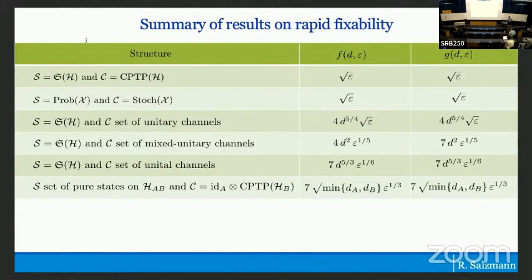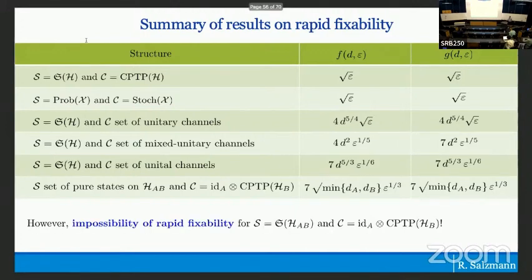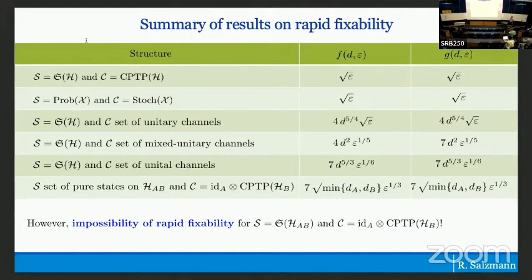On the other hand, rapid fixability is not true generically for all structures of interest. One structure I was really interested in — which connects directly to quantum Markov chains — is the bipartite setup with general mixed states and C being the set of local quantum channels. In that case, we actually find impossibility of rapid fixability: there is a lower bound on the possible approximation function. This is the last thing I want to flesh out.